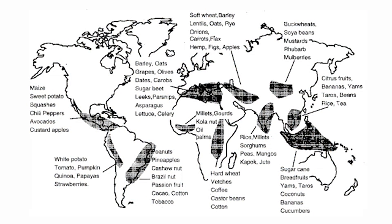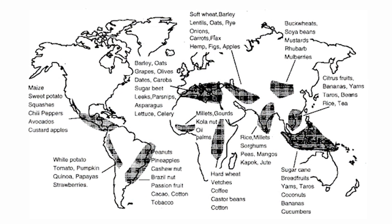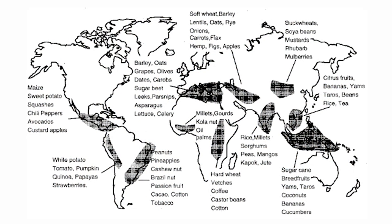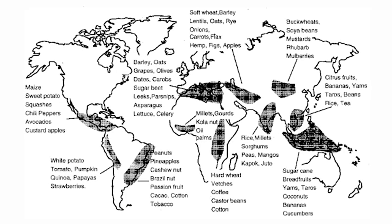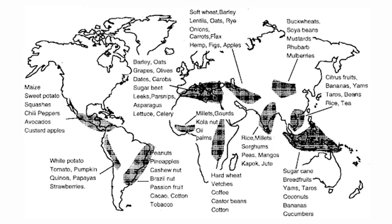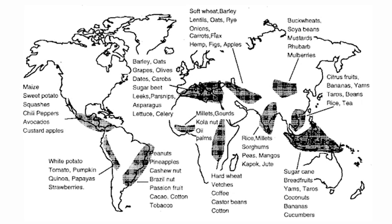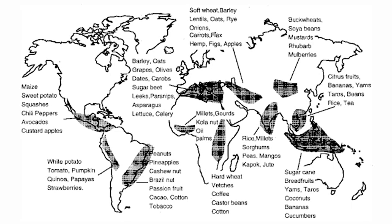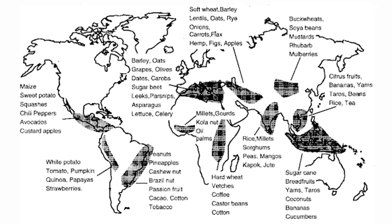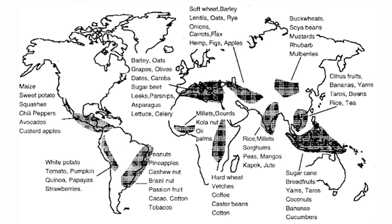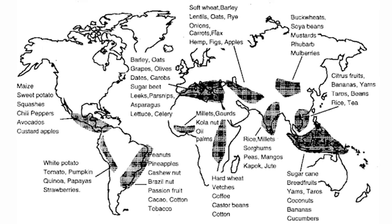Crops that today have diffused around the world were once only in an original hearth region. Here you can see coffee in East Africa, grapes in the Mediterranean, potatoes in South America, and rice in Eastern Asia, to name a few.